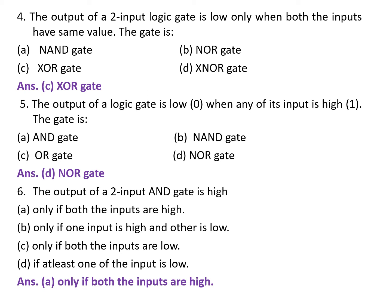Next question: the output of a 2-input AND gate is high — A. Only if both the inputs are high. B. Only if one input is high and the other is low. C. Only if both the inputs are low. D. If at least one of the inputs is low. The correct answer is A.